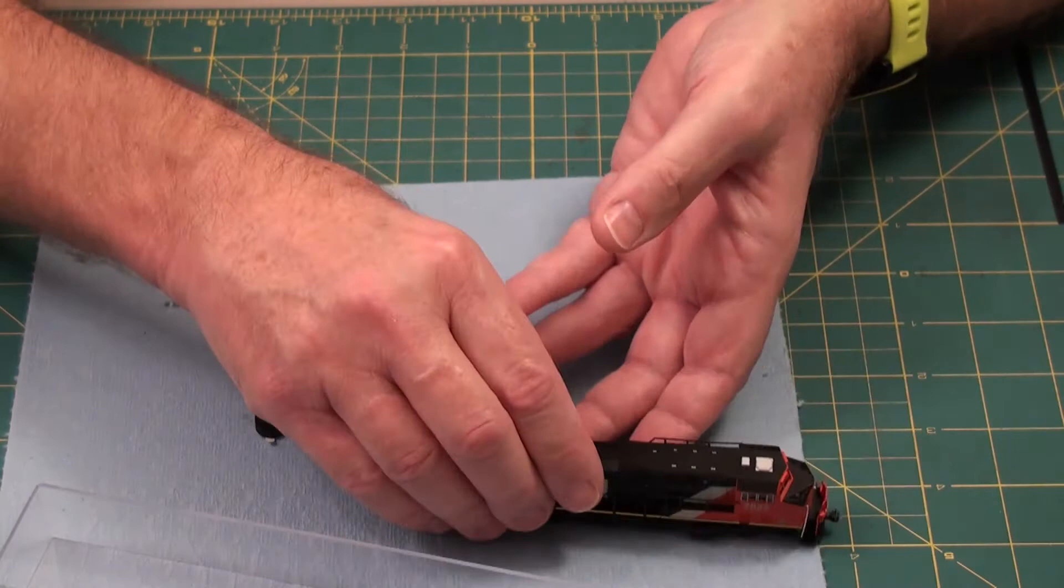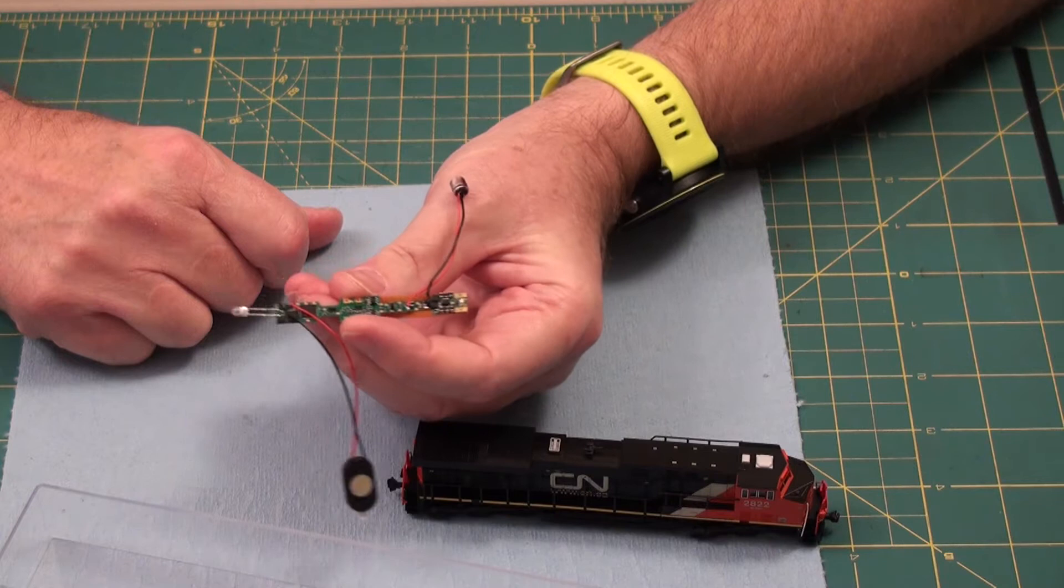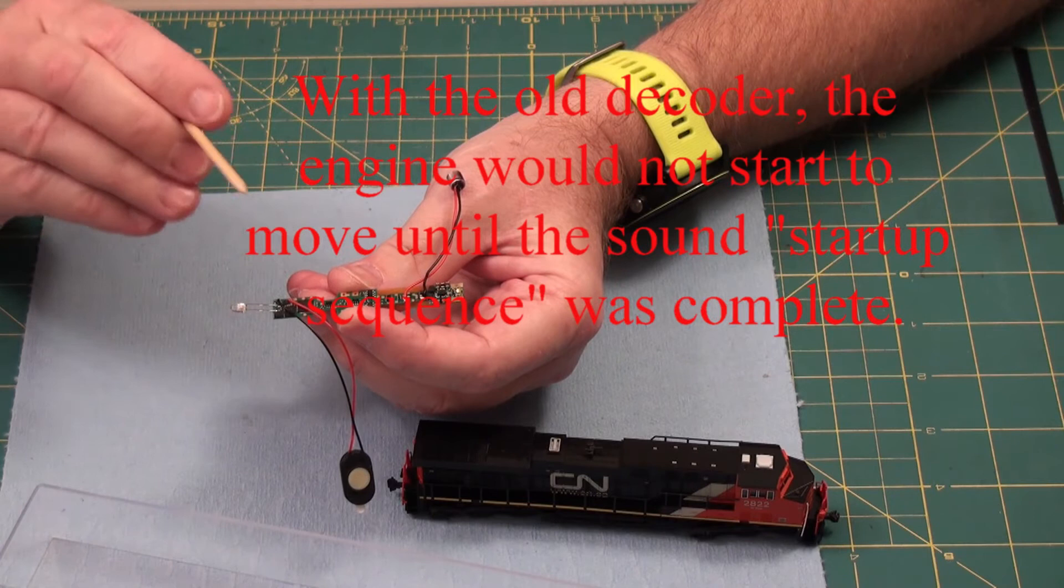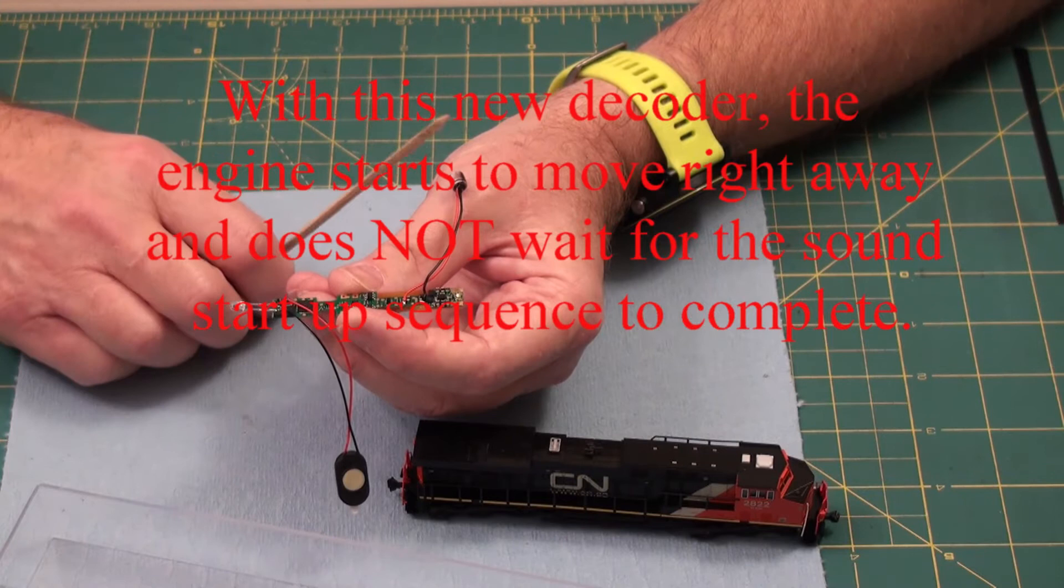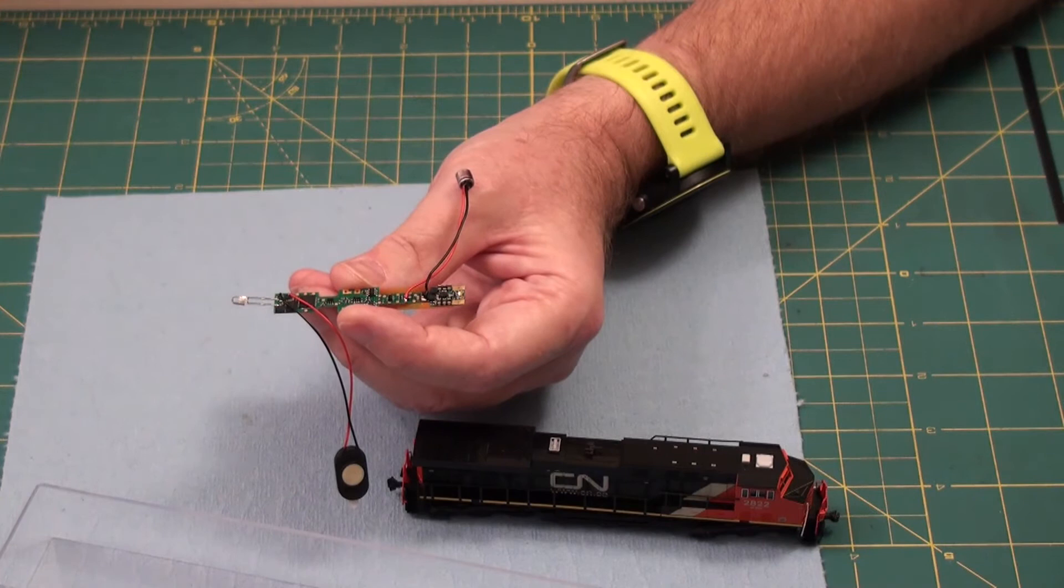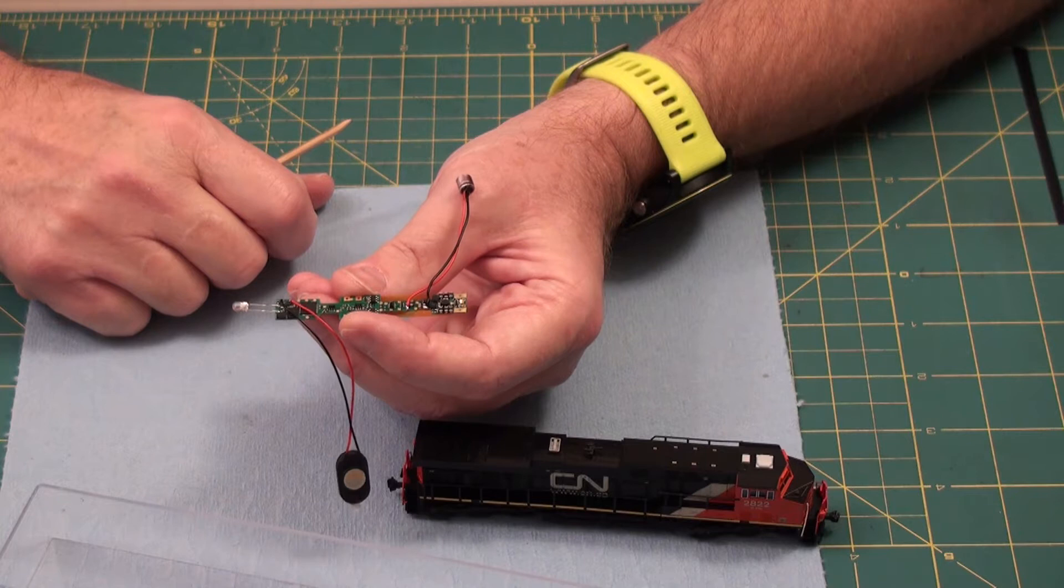The other thing I found out is that Digitrax has upgraded this decoder. So now when you turn the power on, the engine will react right away instead of waiting for a power-up sequence. That's important because if you're running different types of locos, some that do and some that don't, and you ever get a short, then the shorted one sits there for 15 seconds going through its power-up sequence. And the other locos are busy trying to pull it. In any case, we're going to go through the install of this.